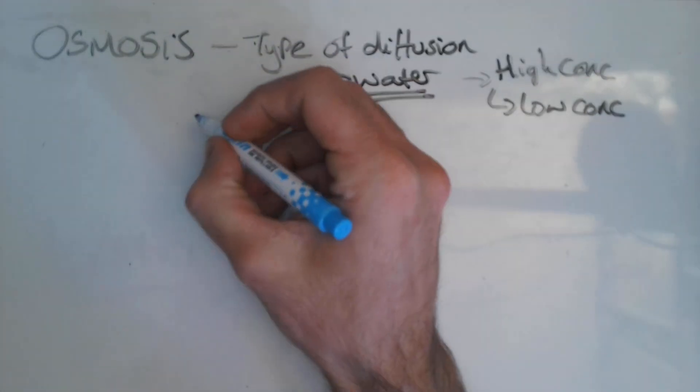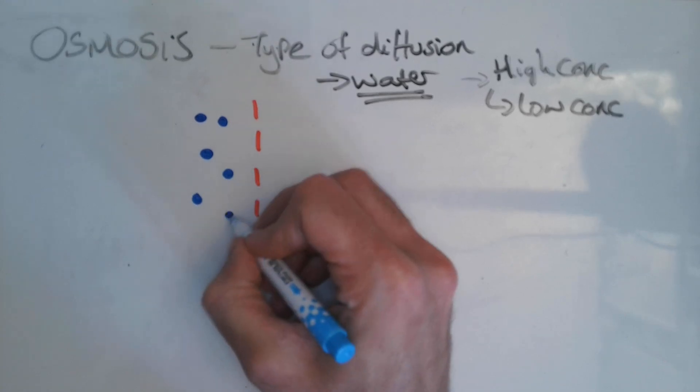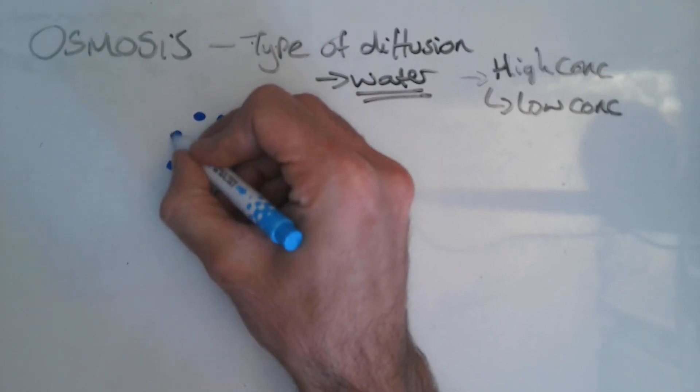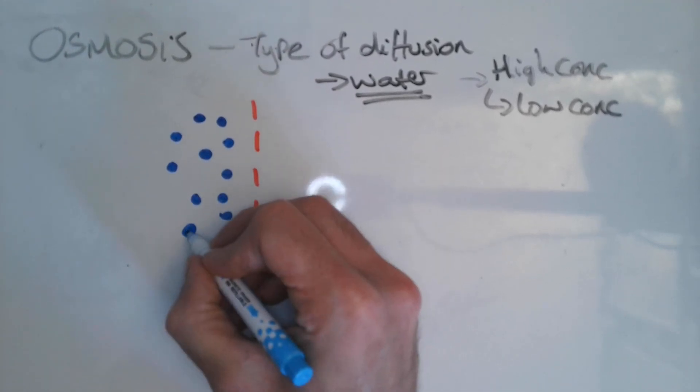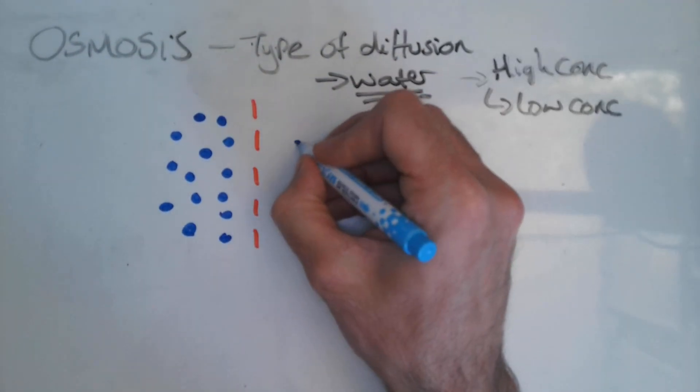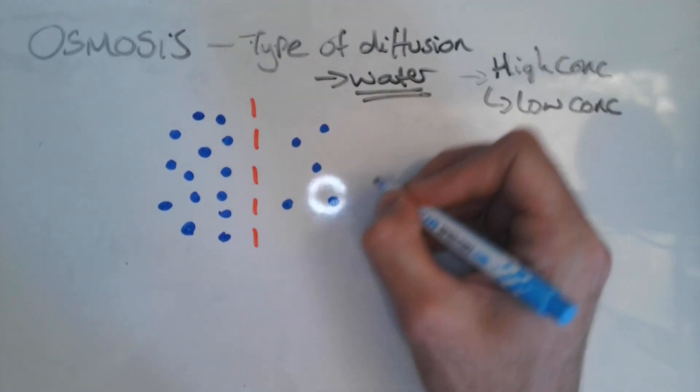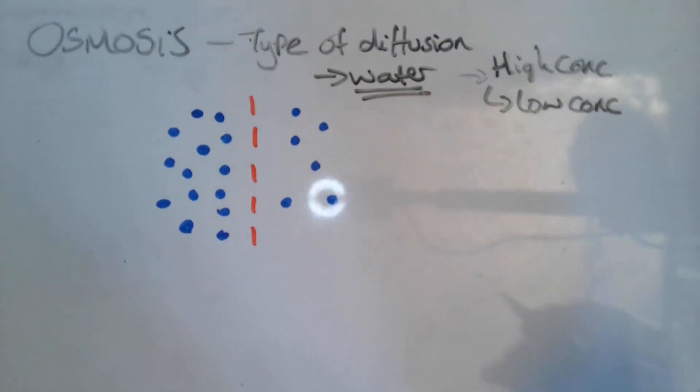I'm going to have on one side a high concentration of water particles like so. This might be referred to as a high water potential. And on the other side, I'm going to have a lower concentration of water particles like so, or a lower water potential.